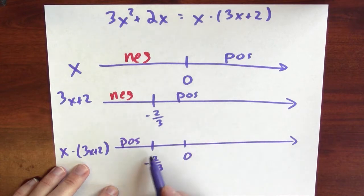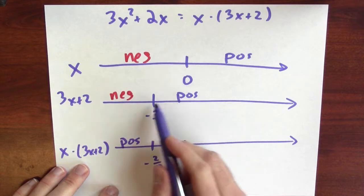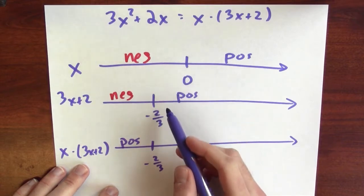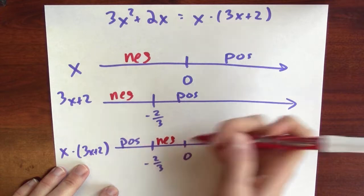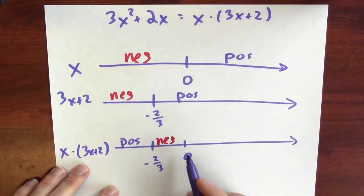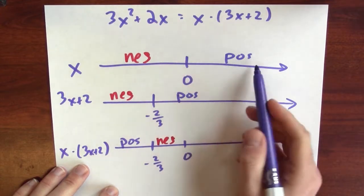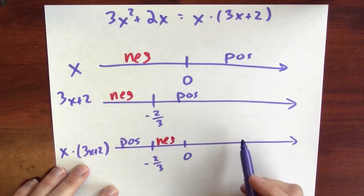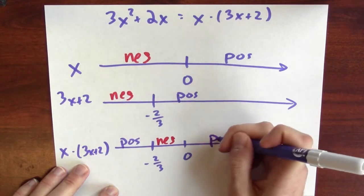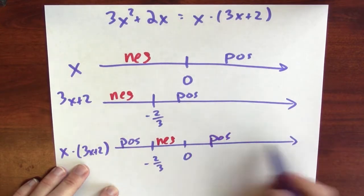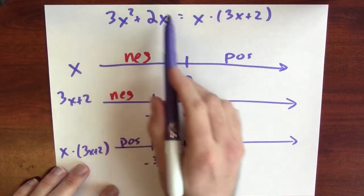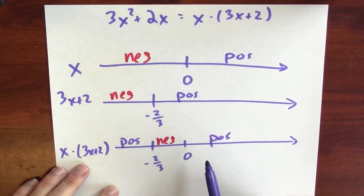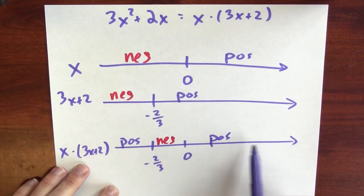When x is between minus 2/3 and 0, then x is negative but 3x plus 2 is positive, and a negative times a positive is negative. And finally, when x is bigger than 0, both x and 3x plus 2 are positive, so the product is positive. On this number line, I've recorded when 3x squared plus 2x is positive or negative.